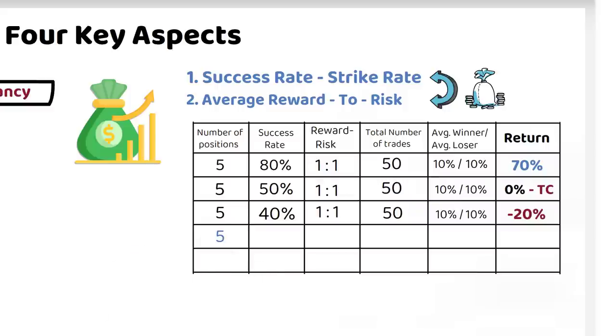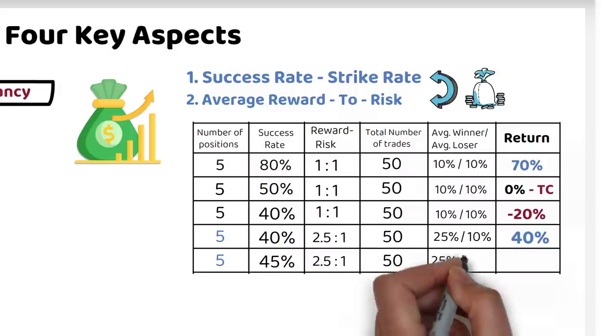On the flip side, with a success rate of 40%, if you can maintain a reward to risk of 2.5 to 1, equal to gaining 25% on winning trades and losing 10% on losing trades, you can achieve a return of over 40% over a series of 50 trades. With just a 5% strike rate increase to 45%, the return would go to over 70%.